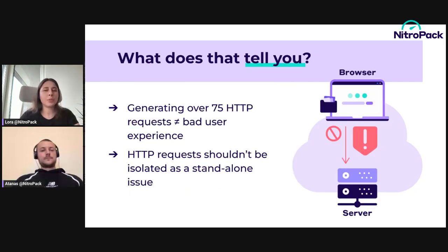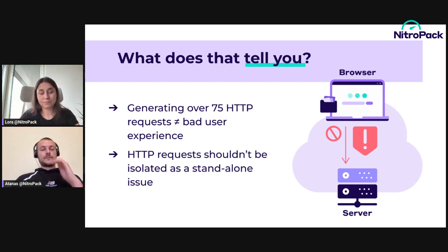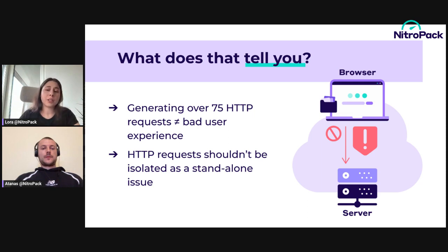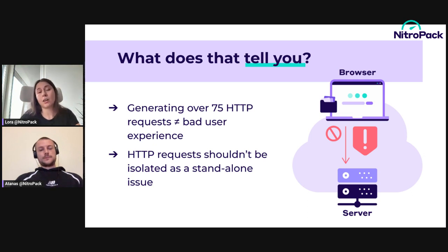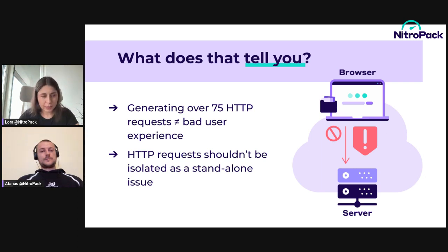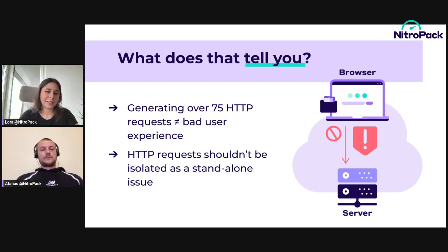Basecamp has a more straightforward homepage with standard headings, several images, and some buttons. Its initial load shows only 43 HTTP requests, with an FCP of 0.6 seconds on desktop. When we compare the stats, there's a huge difference in HTTP request count but end users still get a super fast loading experience. So looking at the number of HTTP requests alone is not a great move — you should always think of them in the context of the specific web page and evaluate its complexity first.